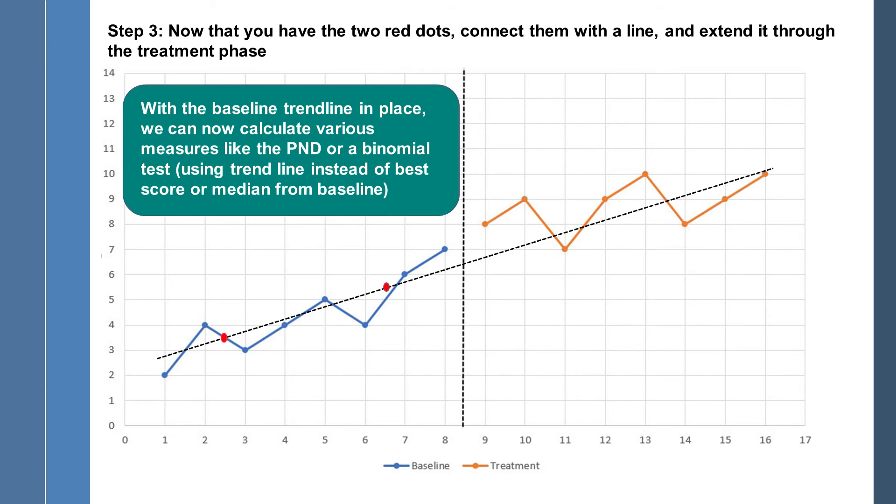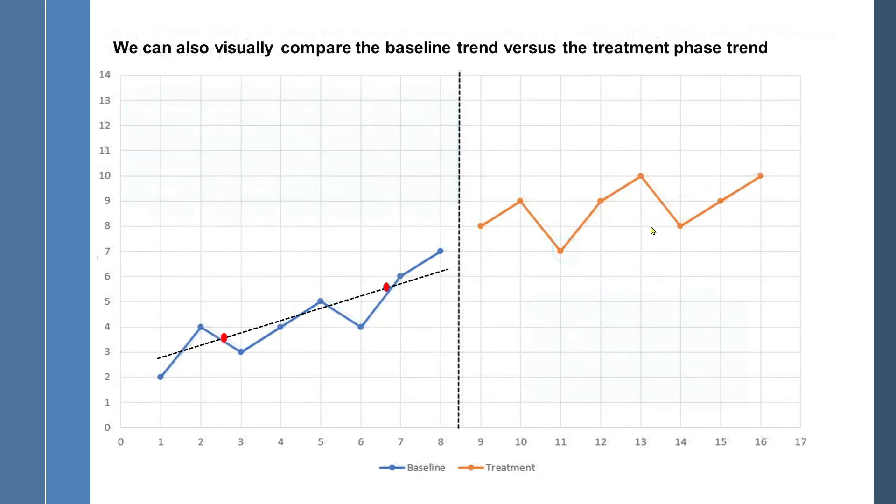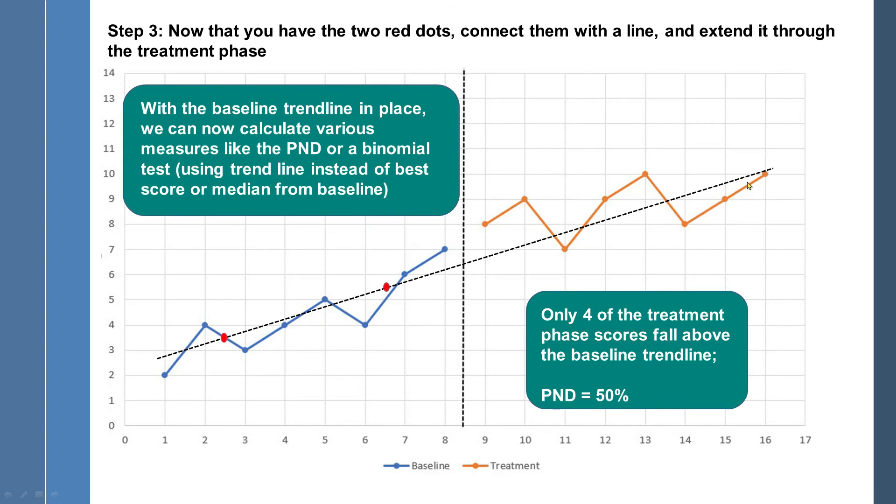Binomial test, you can do that, the PND, which is the easiest one. And as you can see here, there are one, two, three, four data points that are better than the trend line from the baseline and one, I'm going to go back, one, two, three, four that are not better than the baseline trend line. So therefore, the PND, or percentage of non-overlapping data, would be 4 divided by 8, and that is 50%. So our conclusion there would be that there is no treatment effect.